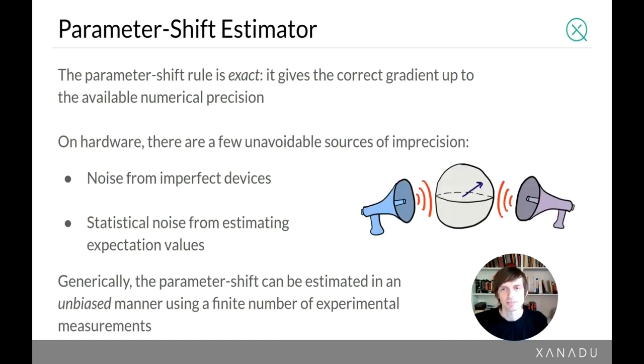Now getting more into the notion of exact versus approximate, the parameter shift rule is exact in the sense that it gives you the correct gradient up to your available numerical precision. If you're running on physical hardware, then there's a few unavoidable sources of imprecision which are going to affect this. So it's still an exact formula, but the imprecision from the hardware will affect the imprecision of the estimate. So the two important sources of imprecision: obviously near-term devices are imperfect and they're going to be noisy. The other source of imprecision is that in order to compute expectation values in practice, we have to run many, many times, sample from a circuit many times and then average. And we're not going to get perfect precision on that with a finite number of measurement samples. So there's some imprecision coming from the estimation process. But the nice thing about the parameter shift rule is that it's unbiased. So if you were able to run an ideal case with an infinite number of experimental measurements, it would converge to the correct exact result.